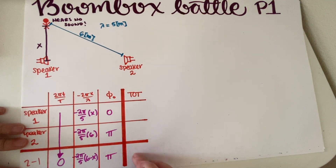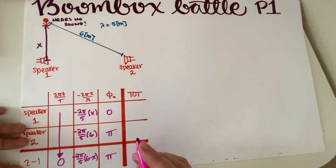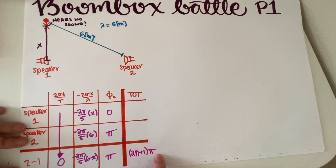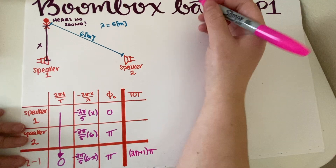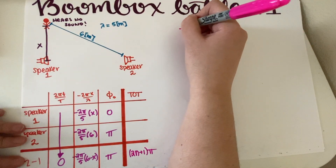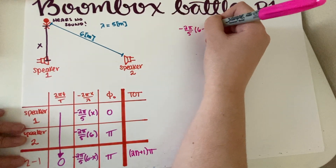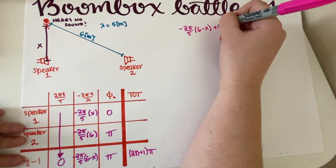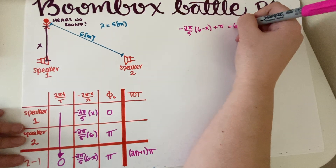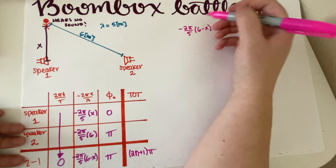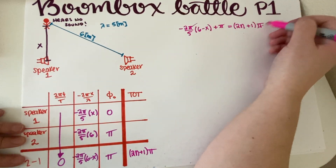This person hears no sound, so this means destructive interference. The condition for destructive interference gives us (2n + 1)π on the right-hand side. So our equation becomes: negative 2π over 5 times (6 minus X) plus π equals (2n + 1)π. The pi's cancel out, simplifying things nicely.